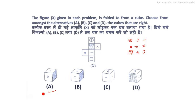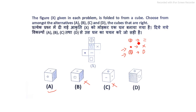Checking the answer options: one option shows the equals sign appearing twice adjacent — this cannot be the answer. Another option shows the shaded region and the box symbol adjacent to each other, but they are opposite faces — so this also cannot be the answer. The answer is A, based on matching valid adjacent face arrangements.